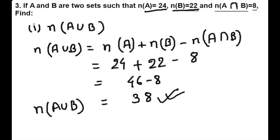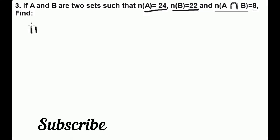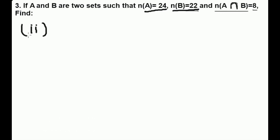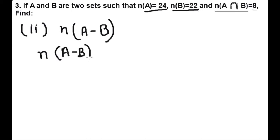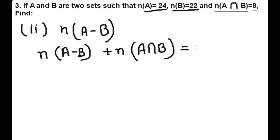The next question is to find the number of elements of A minus B. There is a formula: the number of elements of A minus B plus the number of elements of A intersection B is equal to the number of elements of A.